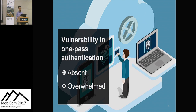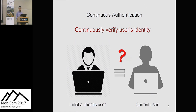The existing one-pass validation can protect legal access to some extent, but there are non-negligible vulnerabilities in one-pass authentication, especially when the user is away from the system or is falsely taken over. Continuous authentication can continuously identify the user's identity even long after the initial login process, verifying that the system is operated by the same user who was initially authorized.